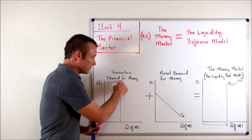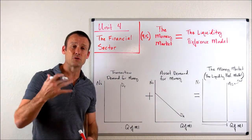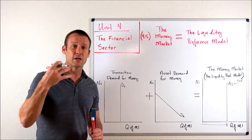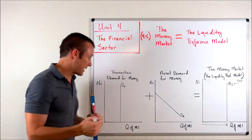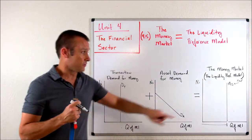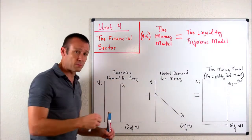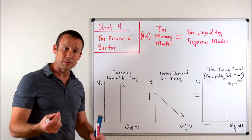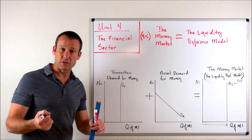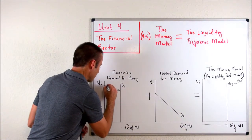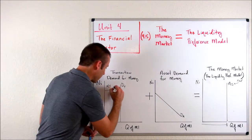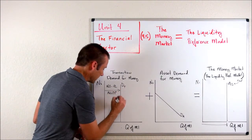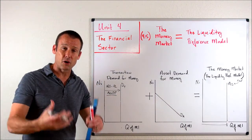We start with the transaction demand for money — our demand for money to do basic transactions: pay our rent, utility bill, insurance, buy food, basic transactions. This portion of our money demand is not sensitive to the nominal interest rate, similar to the money supply curve. It is drawn vertical. What determines this portion? At the macro level, it is our national income and the price level. Multiply those together and you get nominal GDP, which is what is often said to determine our transaction demand for money.